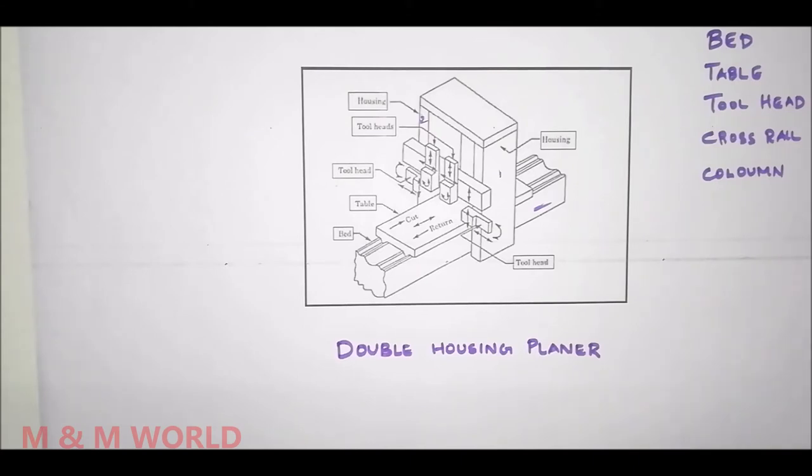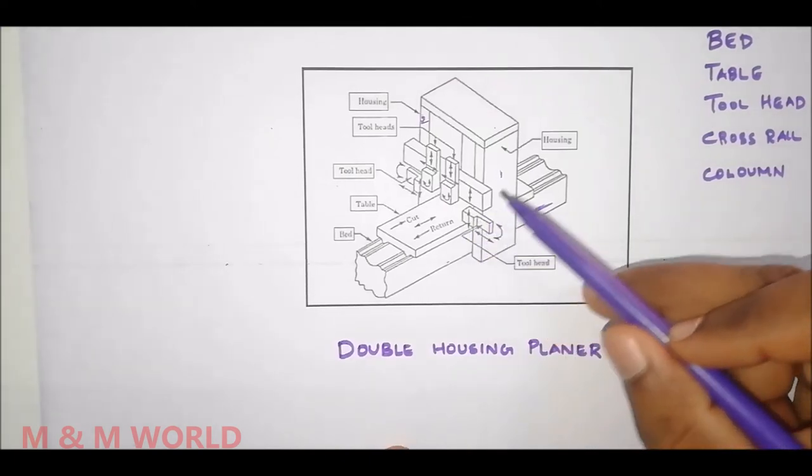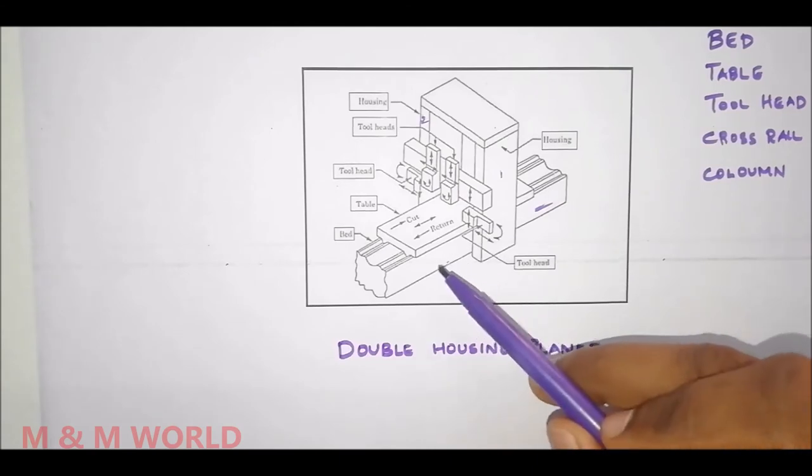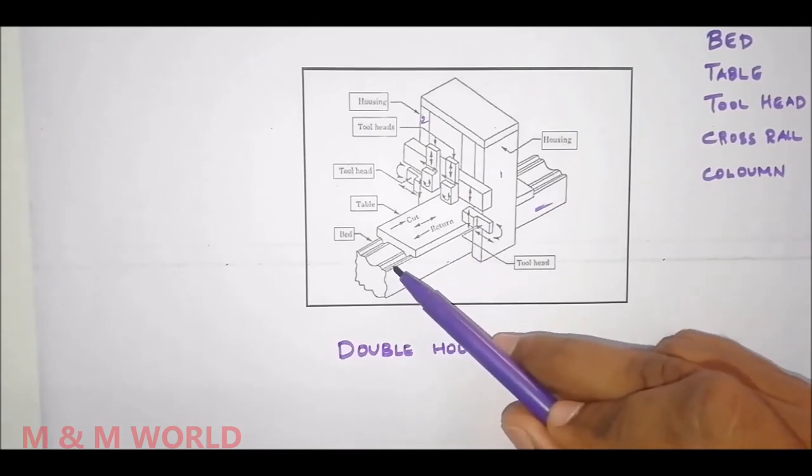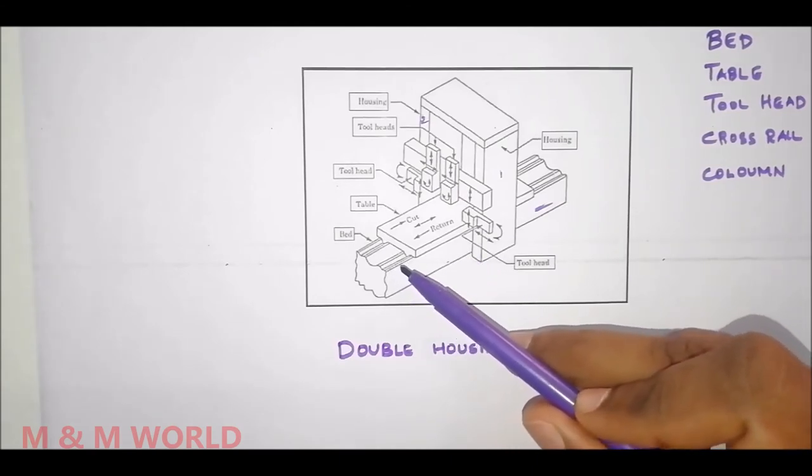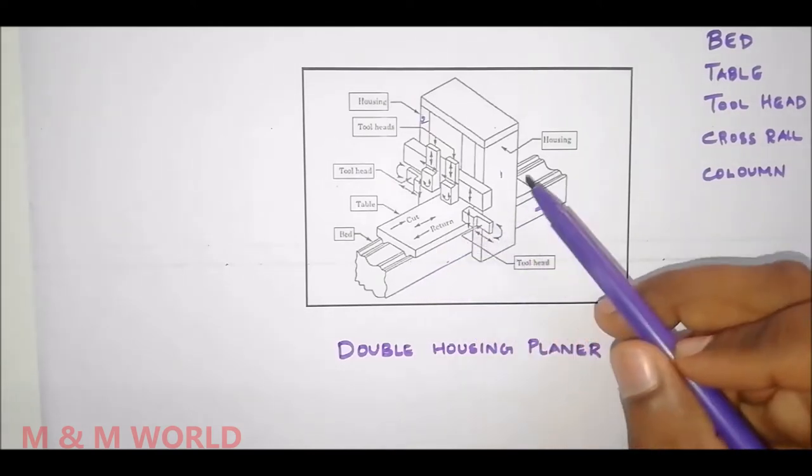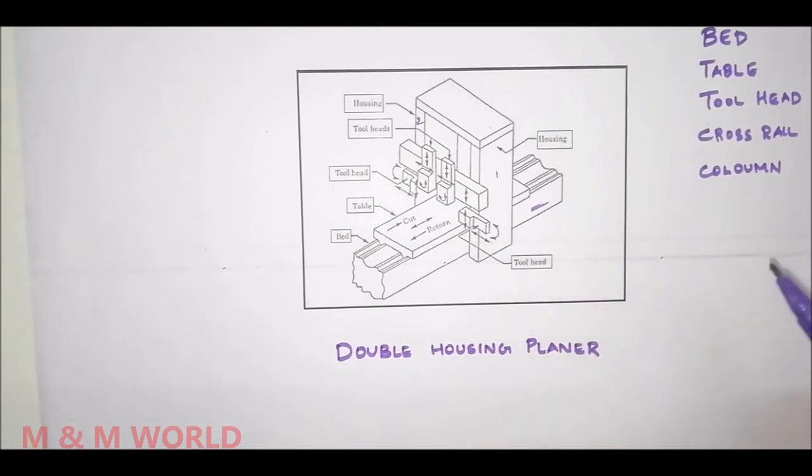The bed is made slightly longer than twice the length of the table so that the full length of the table may be moved on it. The bed is provided with precision base over the entire length on its top surface so that the table can slide on it.